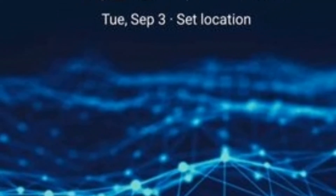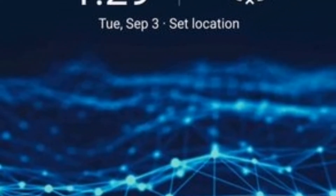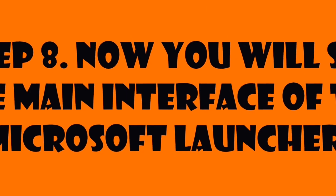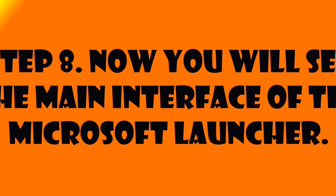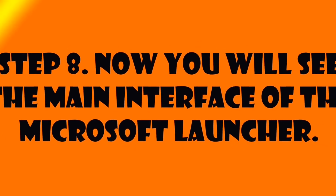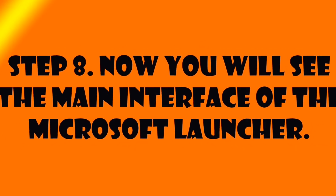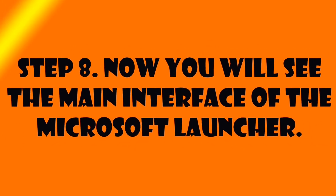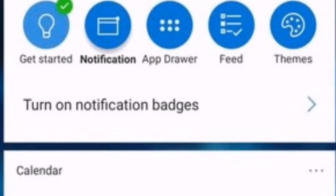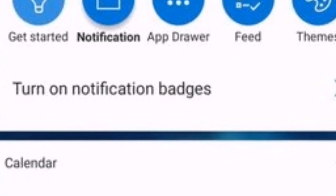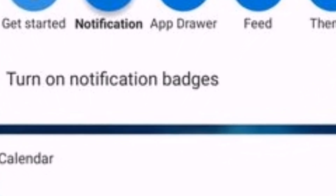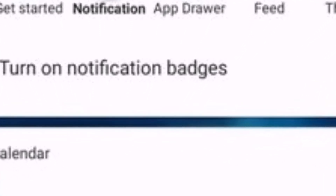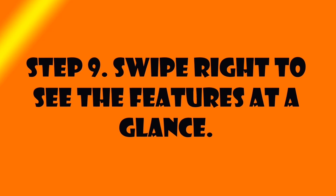Step 8: Now you will see the main interface of the Microsoft Launcher. Step 9: Swipe right to see the 'At a Glance' feature.